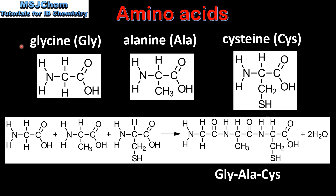Next we look at the formation of a tripeptide made from three amino acids: glycine, alanine, and cysteine. As you can see, the side chain on each amino acid is different. Glycine has a hydrogen atom, alanine has a CH3 group, and cysteine has a sulfhydryl group. Here we have the reaction of the three amino acids in a condensation reaction forming a tripeptide and two molecules of water. The water molecule is formed from the OH group on one amino acid and the hydrogen atom on another.